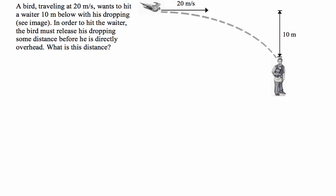Hi guys, projectile motion question here, where we have a bird travelling at 20 metres a second wants to hit a waiter 10 metres below with his dropping.